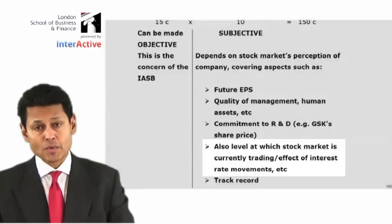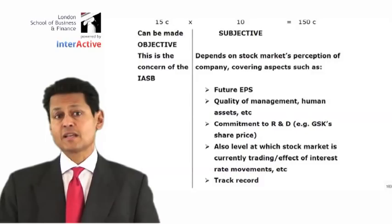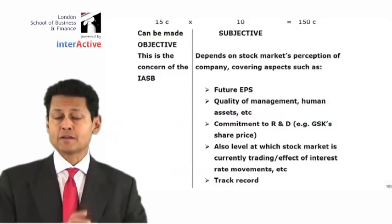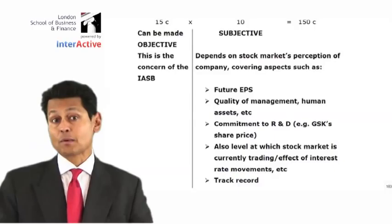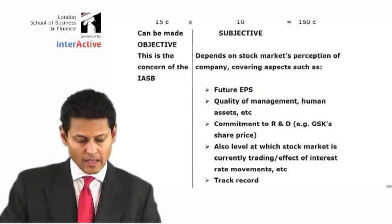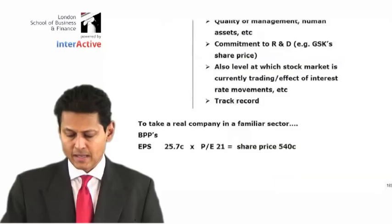What we mean by that is: if interest rates are low, investors might think that it's not worth investing in government bonds and debentures, and they might take the money out and put it into equity. Obviously that raises the price of the equity — it's quite a lot dependent on supply and demand. And there you have a large educational company called BPP with a typical share price.